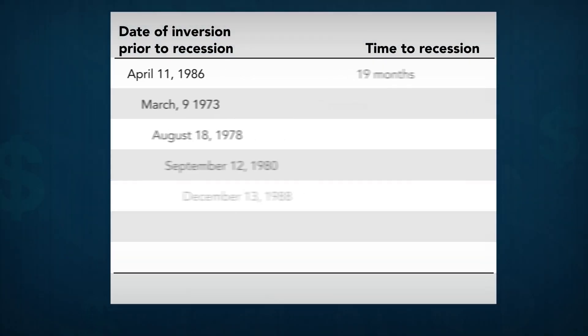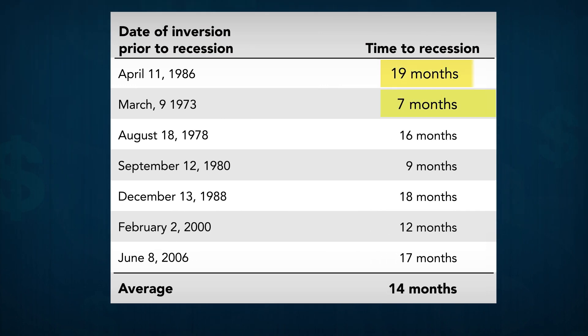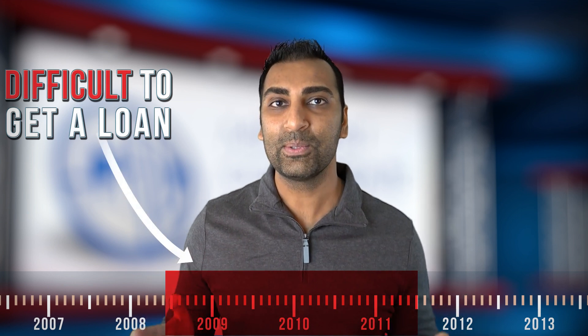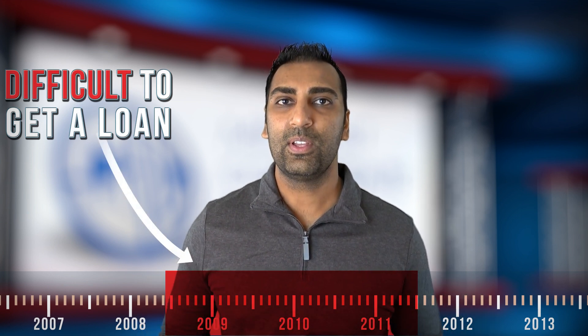Historically speaking, there has been a gap of 7 to 19 months between the yield curve inversion and the actual recession, with an average gap of 14 months. During a recession, funding is extremely difficult to obtain. Most of you may remember the Great Recession of 2008. Between late 2008 and early 2011, it was extremely difficult to get funding for anything.